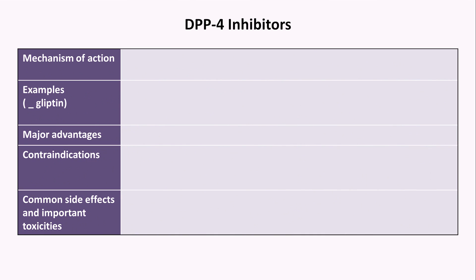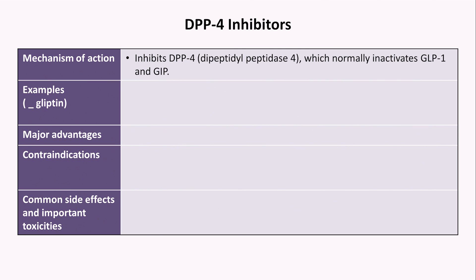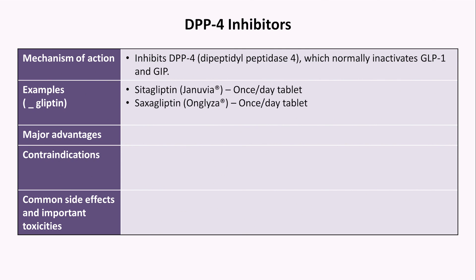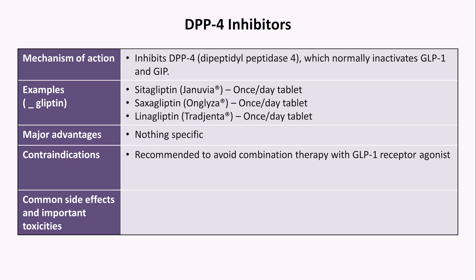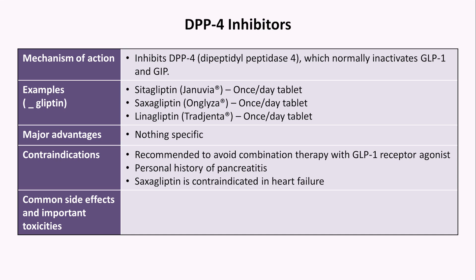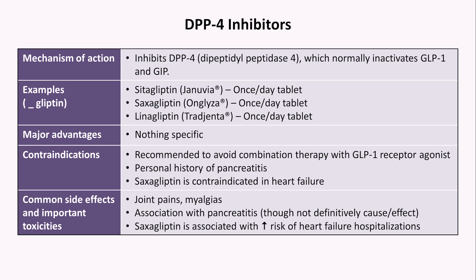We are now getting to medications with less of a well-defined role, despite being commonly prescribed. The DPP-4 inhibitors include sitagliptin, saxagliptin, and linagliptin, all of which are once-daily tablets. They don't have any specific advantage over other drug classes. It is recommended to avoid combining these with GLP-1 receptor agonists. They are also associated with pancreatitis, saxagliptin specifically is contraindicated in heart failure, and common side effects include joint pains and myalgias.